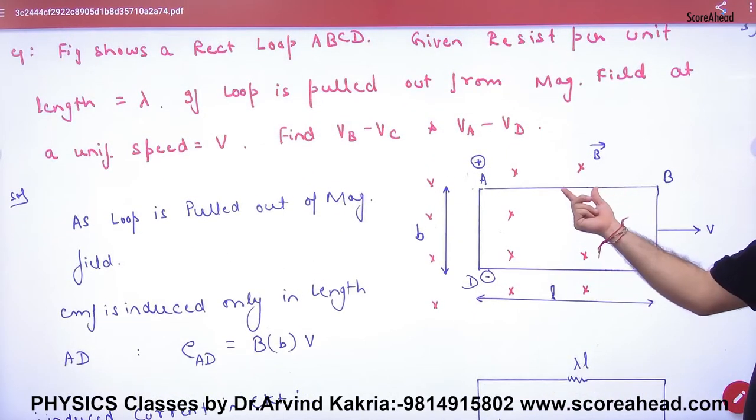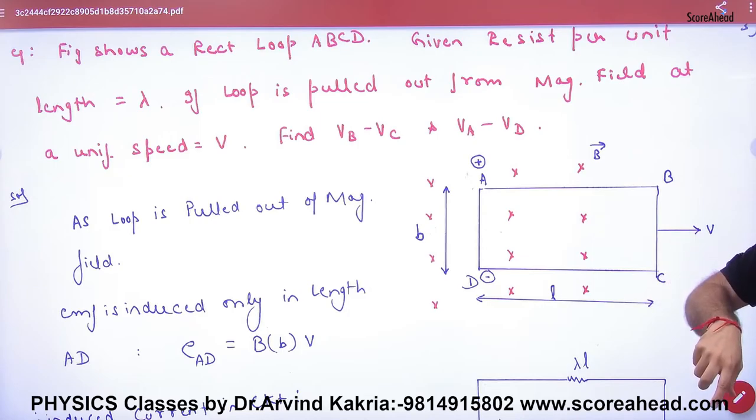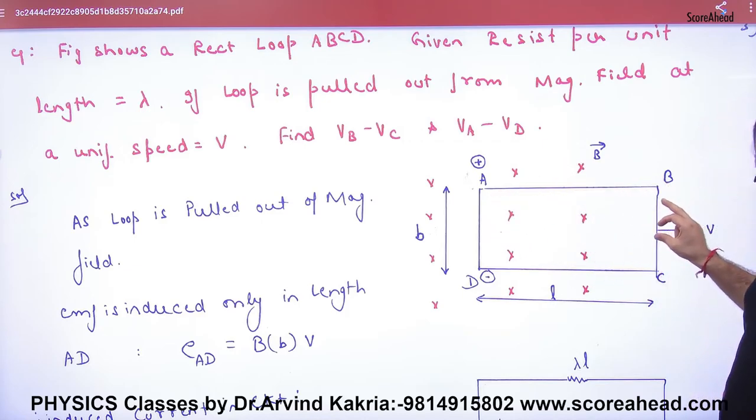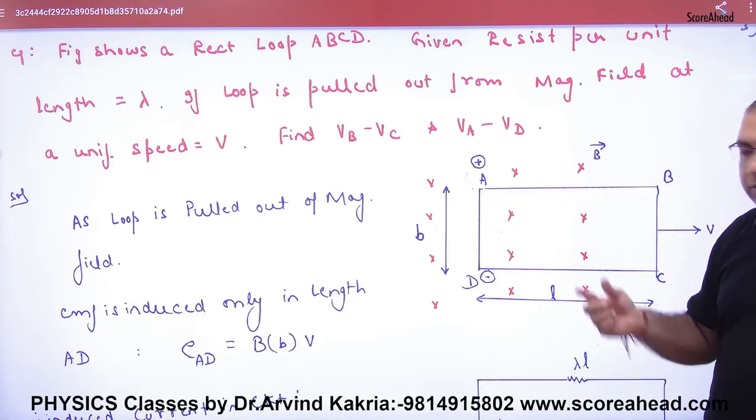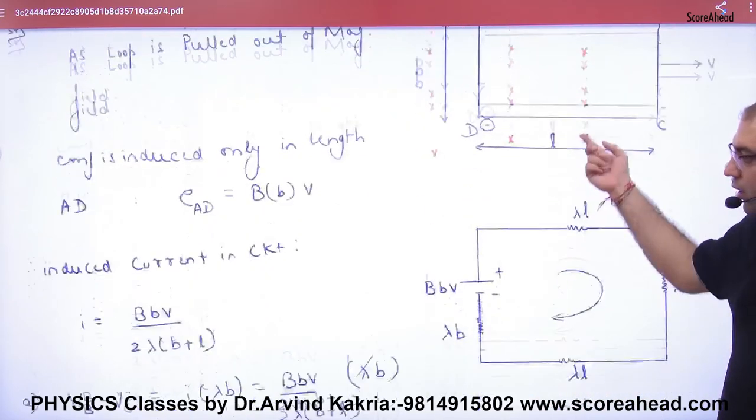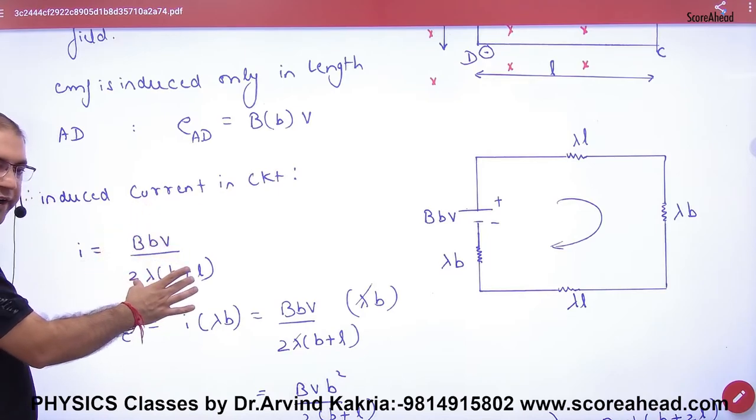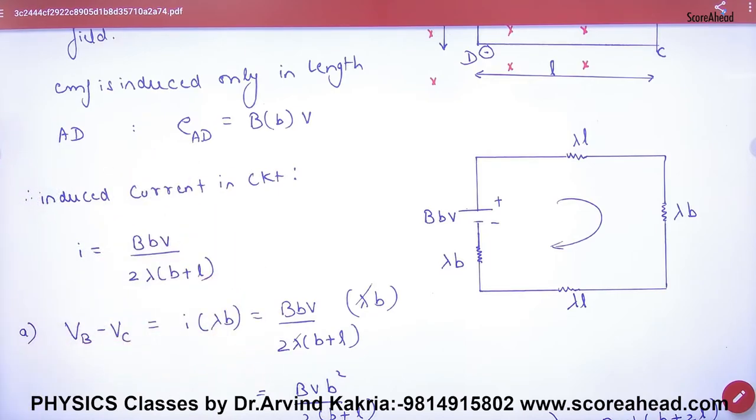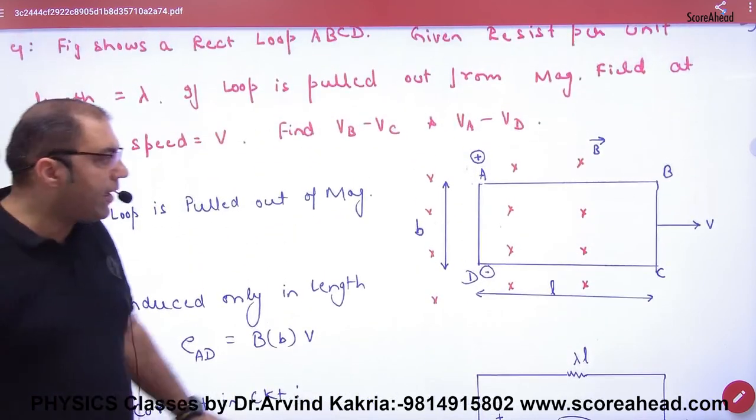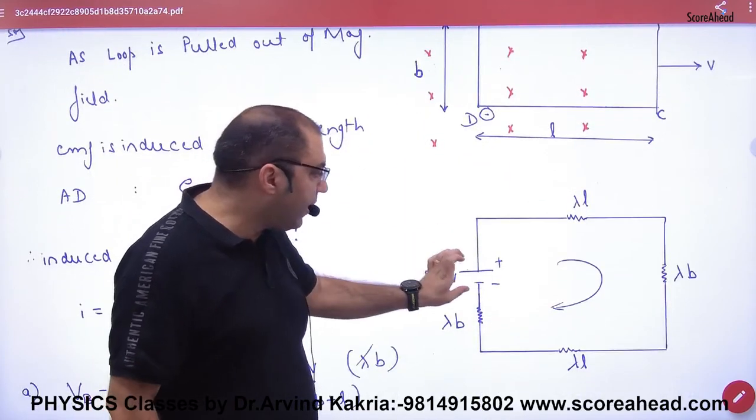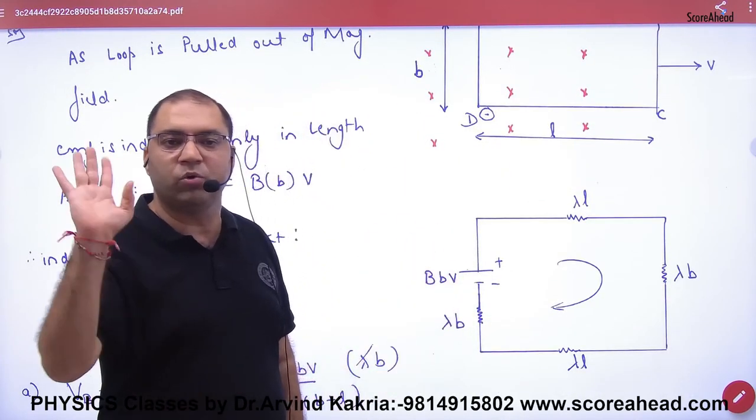Lambda means resistance per unit length. So this resistance is lambda into L, lambda into 4L. Total 4 sides, total resistance. So here the current will be what? BLV, motional EMF will be divided by total resistance. What is the point clear? So you have a current. Now the question is, how is the current? Imagine that here the rod generates EMF. Imagine that here a battery is located which motional EMF develops, B into length into V.